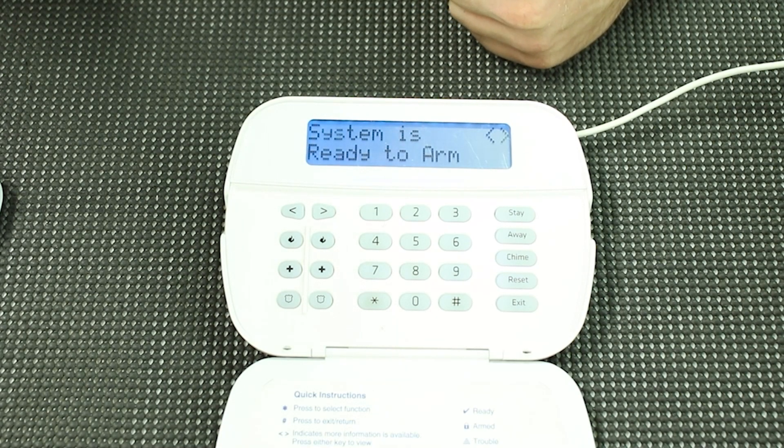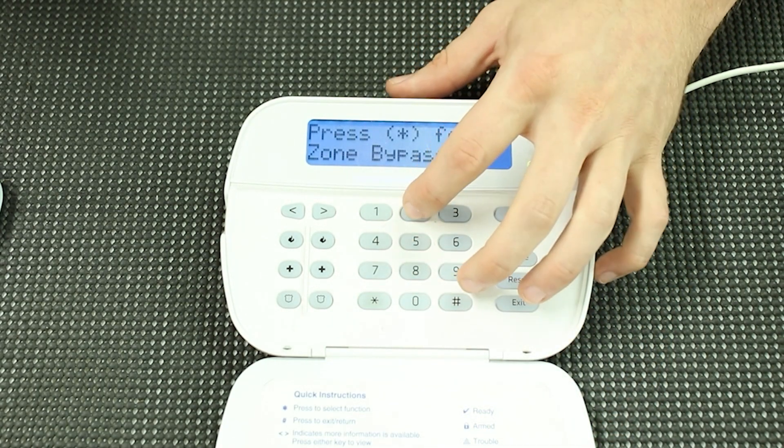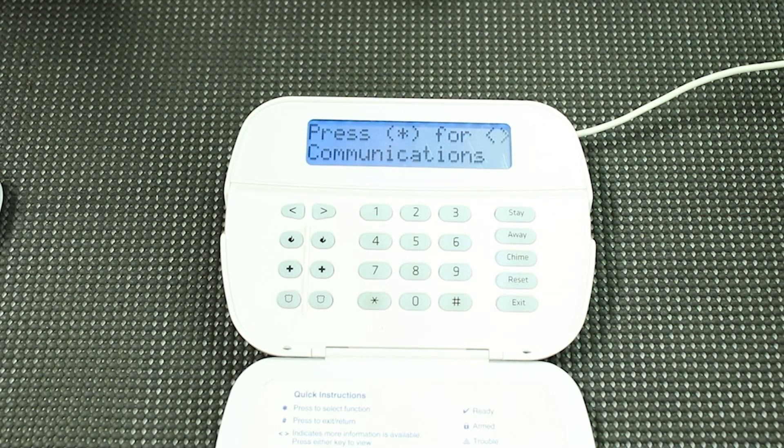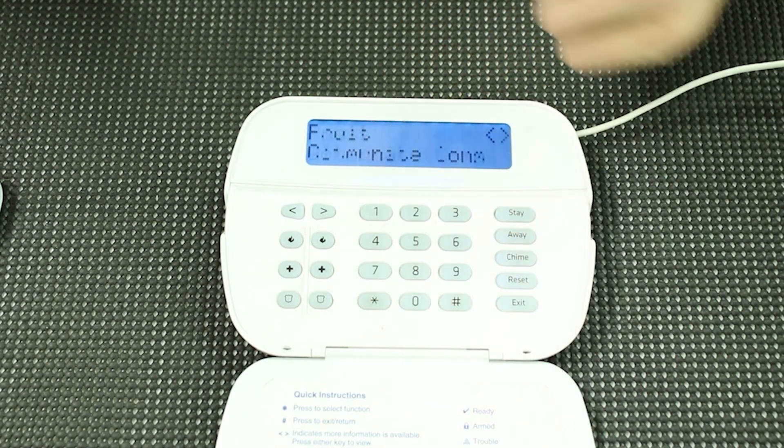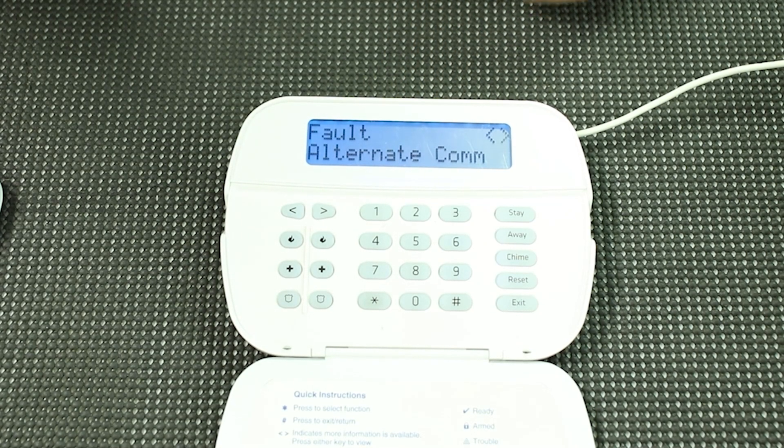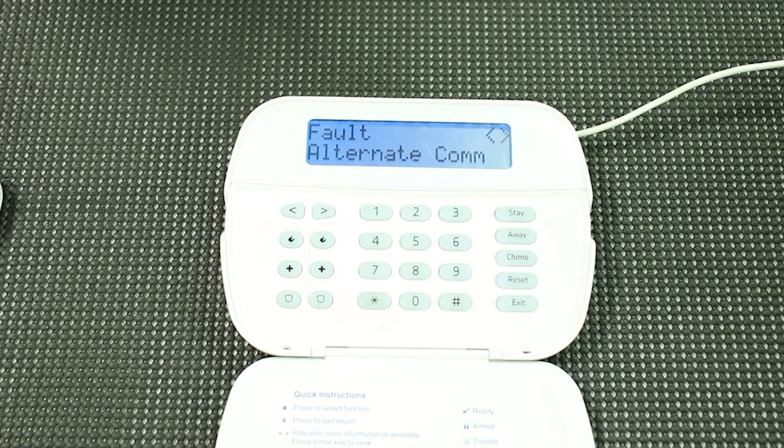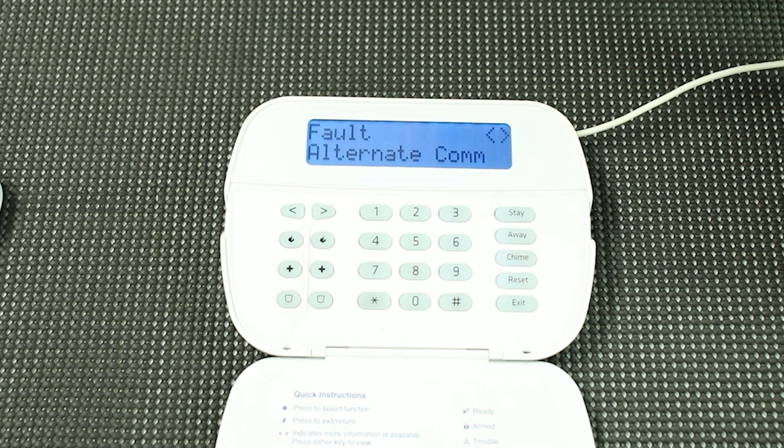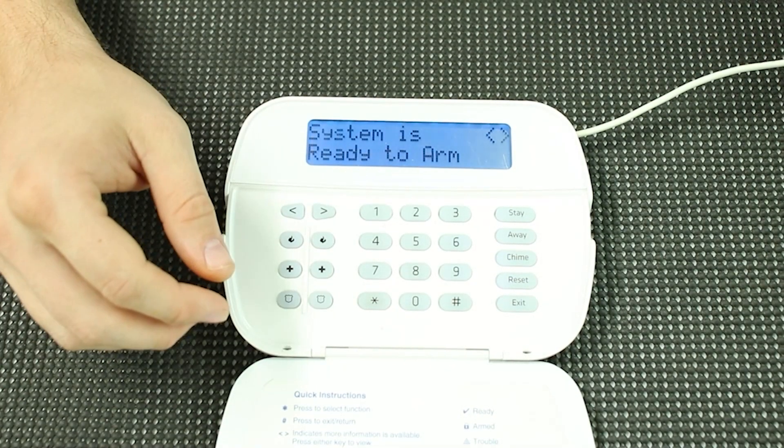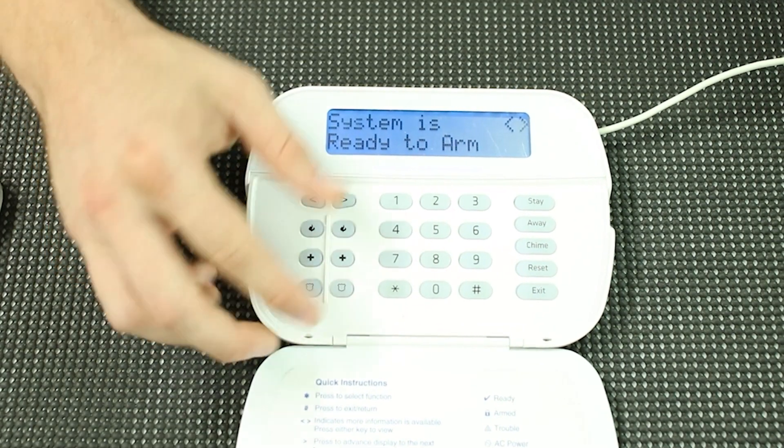What you will see when that happens, if you go to star two and then scroll over to communications, hit star, it says fault alternate com. So I'm going to fix the wiring real quick and then we will see what it says afterwards.